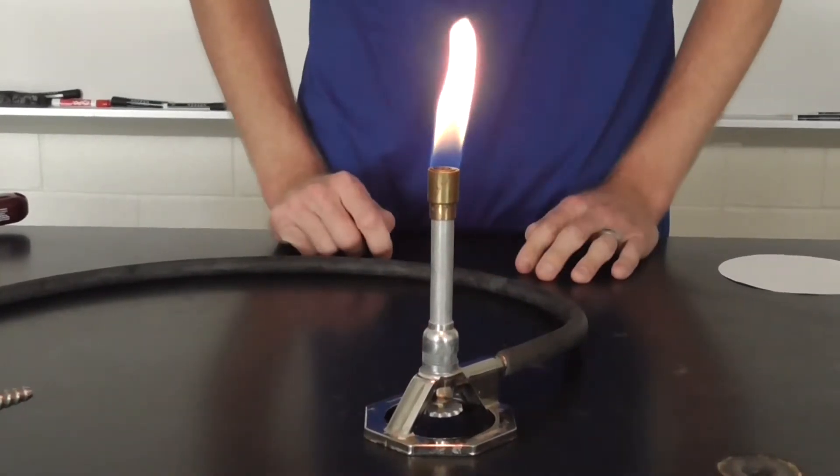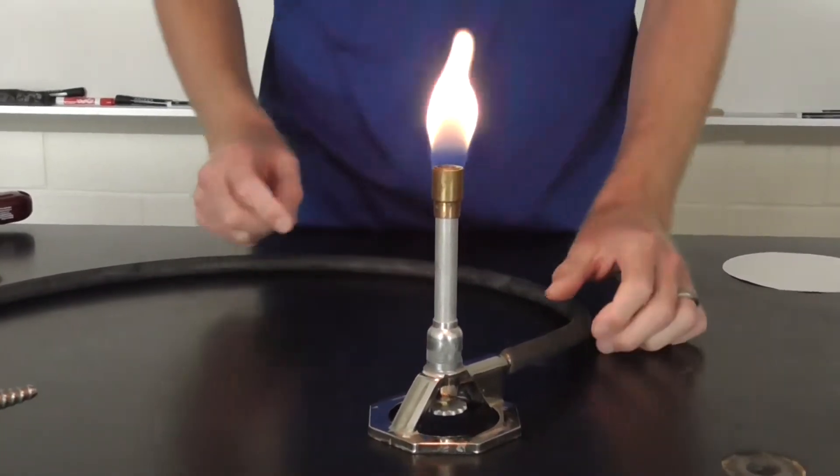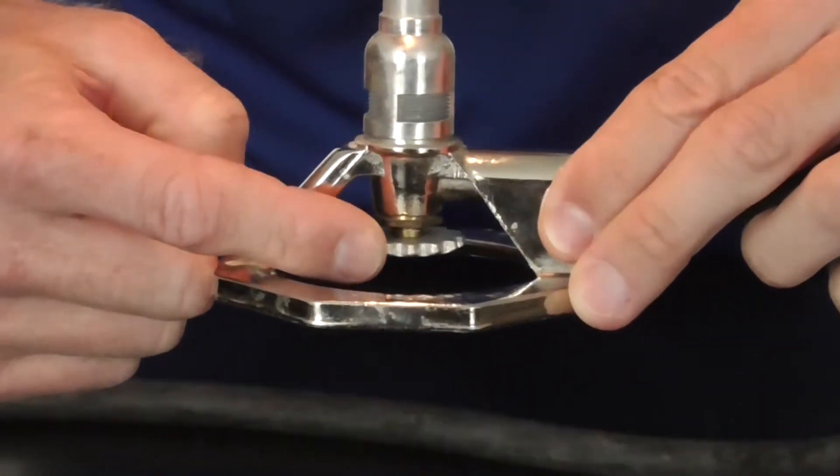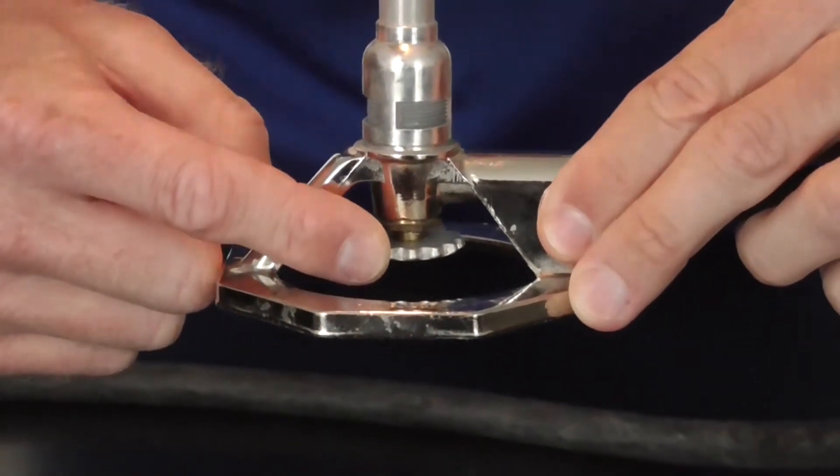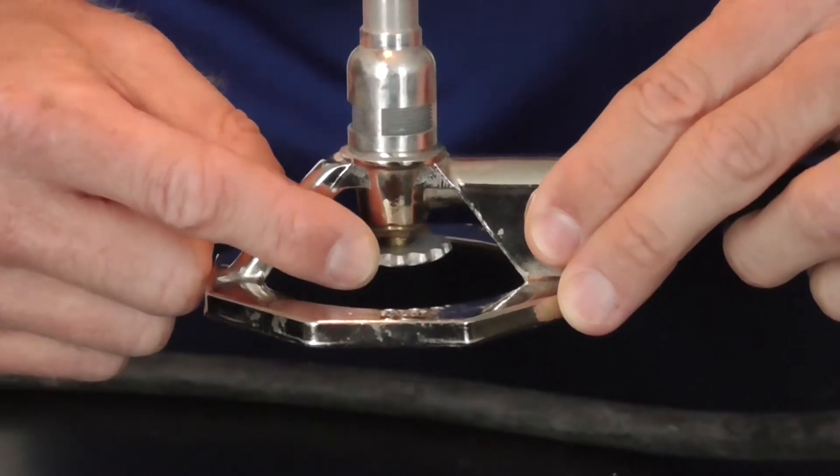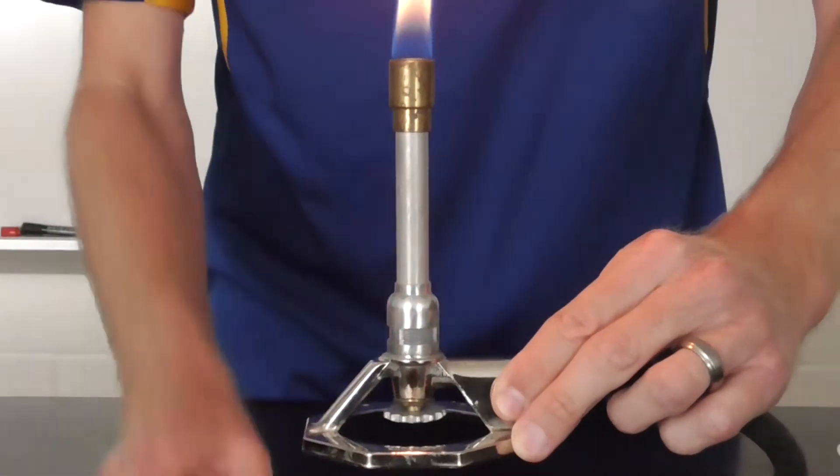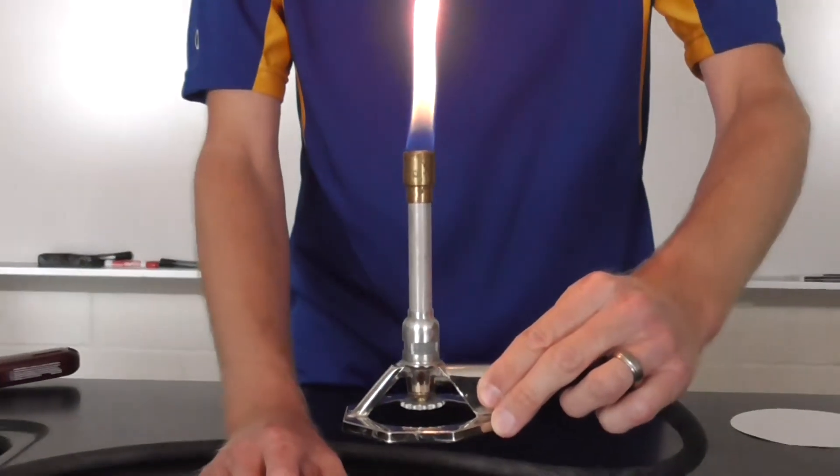Now there's two adjustments that can be made on the Bunsen burner. On the bottom, there's a screw. This screw controls how much gas goes through the valve. There's also this barrel. This barrel swivels, and the barrel controls how much air flows through.